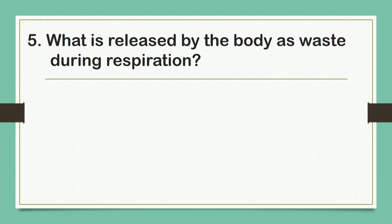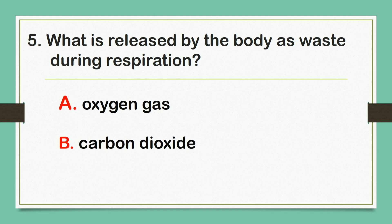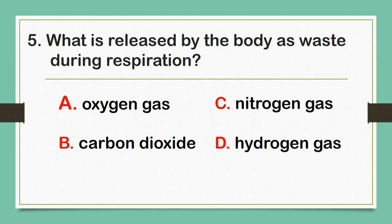What is released by the body as waste during respiration? Letter A. Oxygen gas. B. Carbon dioxide. Letter C. Nitrogen gas. Or letter D. Hydrogen gas. And the correct answer is letter B: Carbon dioxide.